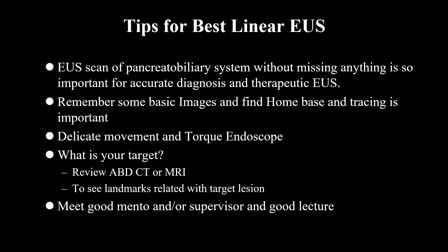In summary: EUS scanning of the pancreatic biliary system without missing anything is very important for accurate diagnosis and selective EUS. We need to remember some basic images, find a home base, and tracing is very important. Sometimes we need precise endoscope movements. We need to know what your target EUS scanning is. Reviewing CT or MRI before EUS scanning is recommended. We need to identify landmarks related to target regions, and it helps to learn from a good mentor or supervisor and attend good seminars like this. Thank you for your attention.